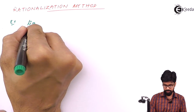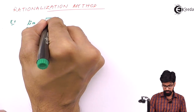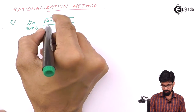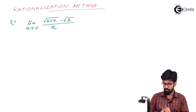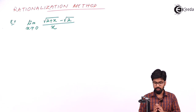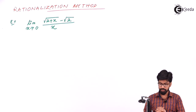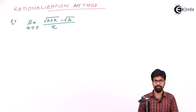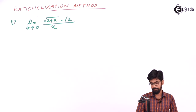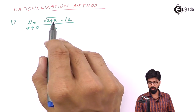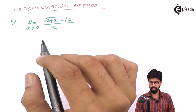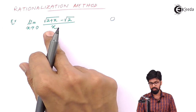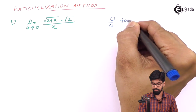Find the limit x tends to 0 of [√(2+x) − √2] / x. We have to find out the limit when x approaches 0. First, we substitute the value of x in the function. When we substitute x = 0, the numerator gives √2 − √2 = 0, and the denominator is directly 0. So it is in the form 0/0.